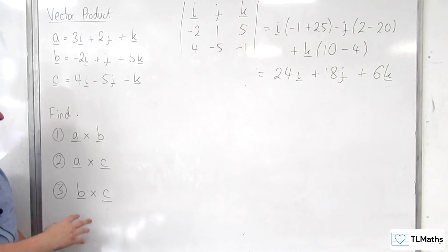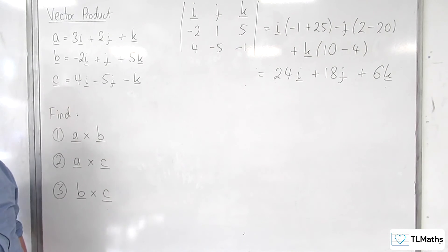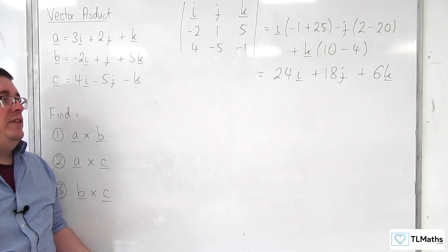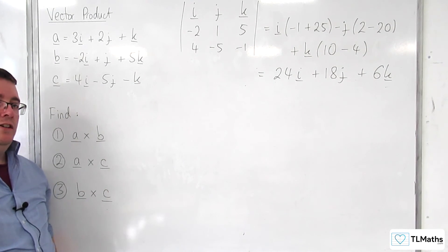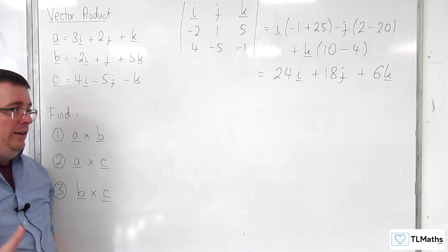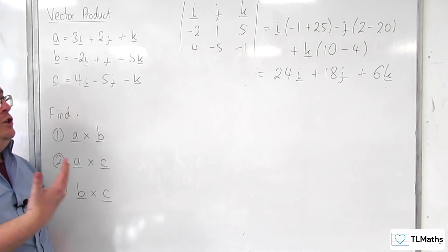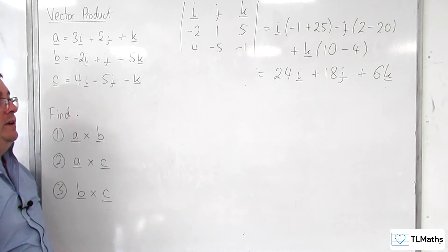And so that is B cross C. That's how you can find the vector product easily using the determinant of this matrix.